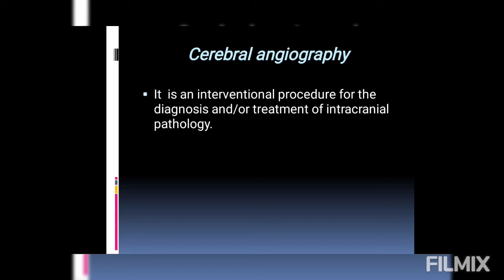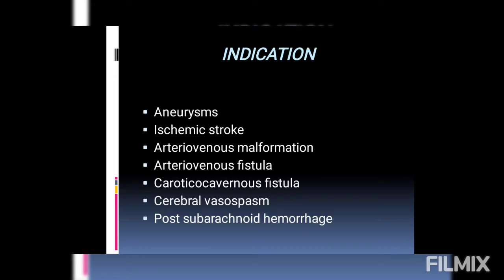The second procedure is cerebral angiography. This is a medical procedure which helps doctors examine the blood vessels in the head, neck, and brain. We insert a catheter through the femoral artery, which provides a straight path to the vessels in the head, neck, and brain without coming close to or crossing the heart. It is an interventional procedure for the diagnosis and treatment of intracranial pathology.